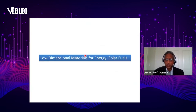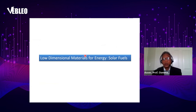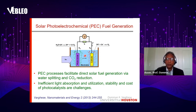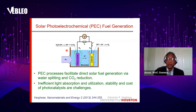Now we come to solar fuels — the use of low-dimensional materials for solar fuel generation. Solar fuels are emerging as an alternative route for energy conversion using solar energy. One technique is to use the photoelectrochemical technique for solar fuel generation. We use photocatalysts as electrodes, either as anode or cathode, with an appropriate electrolyte where we need to generate the fuel. When we shine light or apply a potential between the two electrodes, we generate the fuels.